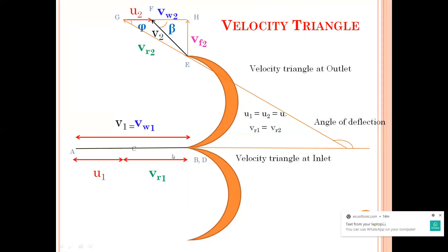My alpha and theta are zero, and since all are in the same line my relative velocity vr1 is v1 minus u1. I was dividing v1 into its horizontal and vertical components. So my v1 is entirely the horizontal component — I can write v1 is equal to vw1 and vf1 is equal to zero.